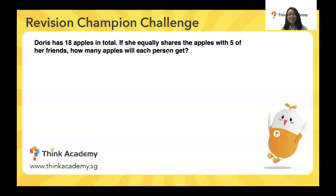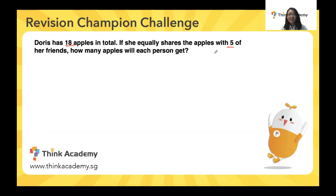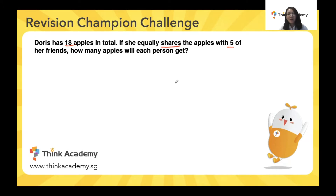So for this question, it's saying that Doris has 18 apples in total. If she shares the apples equally with five of her friends, how many apples will each person get? The key point of this question is to figure out how many people are sharing the apples. The key word here is 'share.' That means Doris is not giving away all her apples, but rather she is sharing the apples, so she herself still keeps some of the apples.